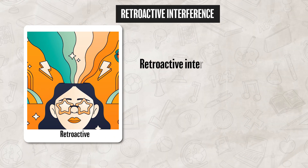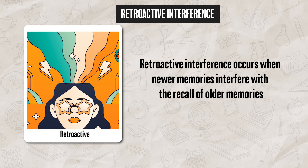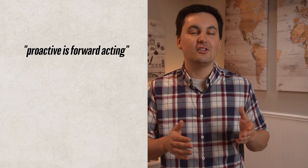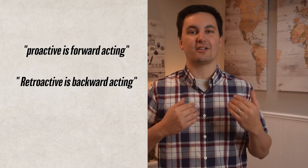Retroactive interference occurs when newer memories interfere with the recall of older memories. For instance, you get a new class schedule for the new semester, but when your friend asks about last semester, you have trouble remembering your exact class order. When trying to remember the difference, just remember that proactive is forward acting and retroactive is backwards acting.